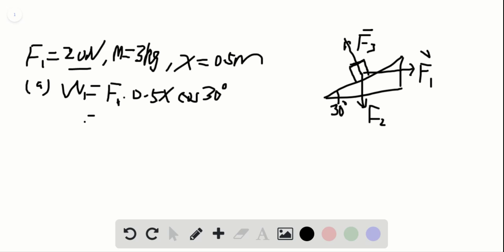This gives 8.66 joules. W2, the work done by gravity, is F2 times 0.5 times sine 30 degrees.